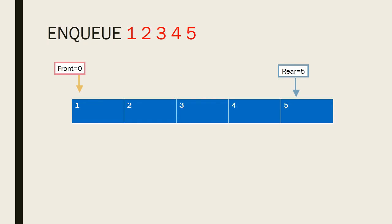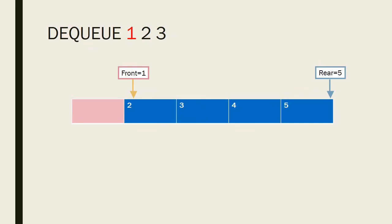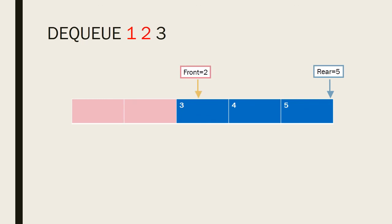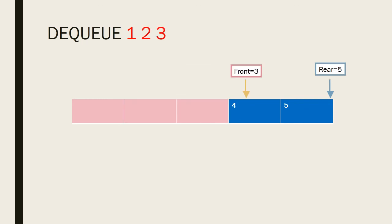Now we retrieve data from the Queue — that means we dequeue. We dequeue 1 — front is incremented to 1. We dequeue 2 — front becomes 2. We dequeue 3 — front becomes 3. The process continues in this manner. These are the three important components of embedded programs: State Machine, Circular Buffer, and Queue.